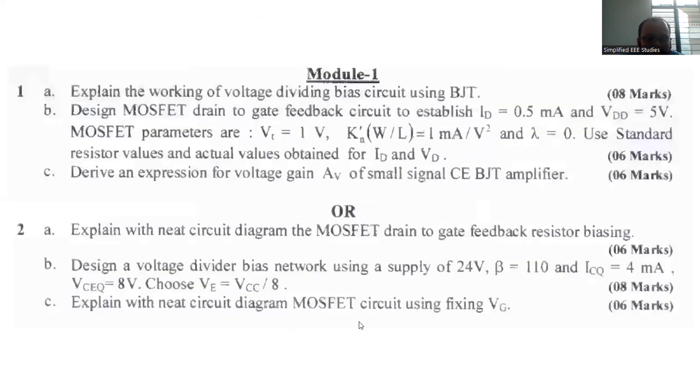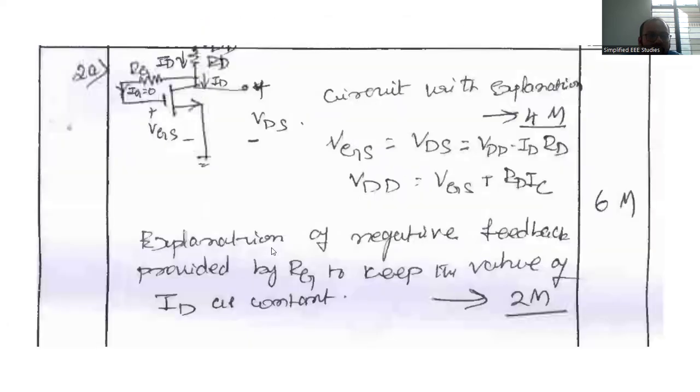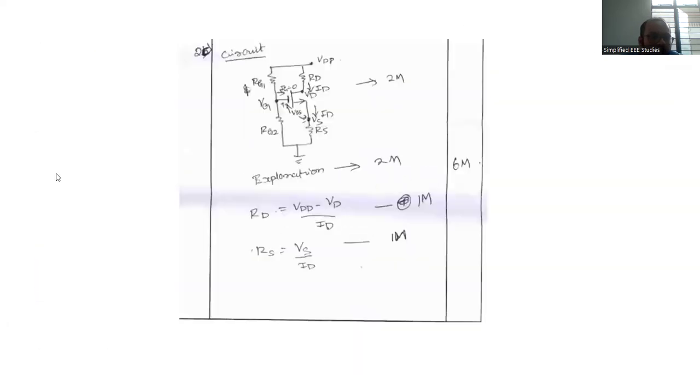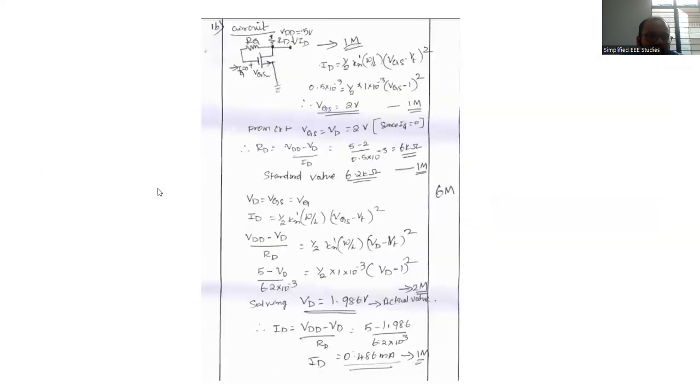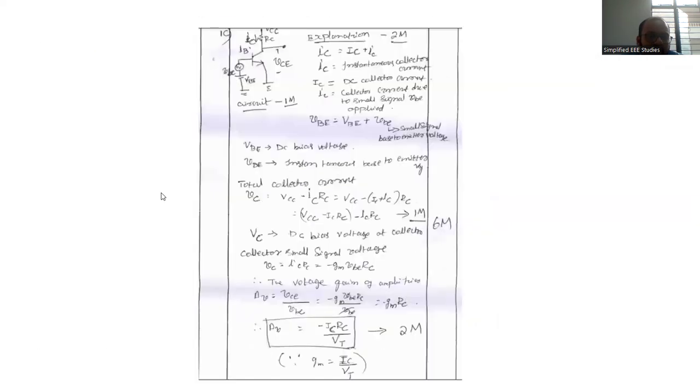Question number 2C. Explain the circuit diagram using MOSFET fixing. So you can follow up this particular diagram, very simple. Please follow up this diagram and provide suitable explanation. RS you will be getting as VS by ID. This is what you are expected to follow in the examination.